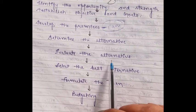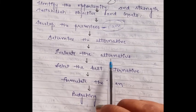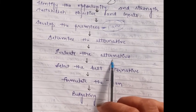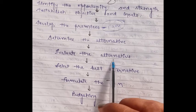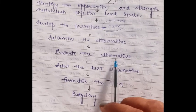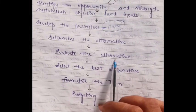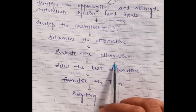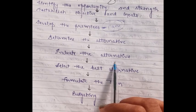In the alternative course of action, we analyze our strengths, weaknesses, opportunities, and threats to determine whether the alternative we choose is feasible or not. Basically, you can understand this in a single concept: we use feasibility analysis to evaluate the alternatives.